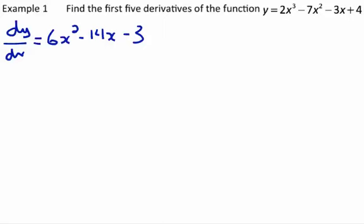So the second derivative, which we're going to call d squared y by dx squared, is just the derivative of the derivative. So it's the derivative of 6x squared minus 14x minus 3, which is 12x minus 14.